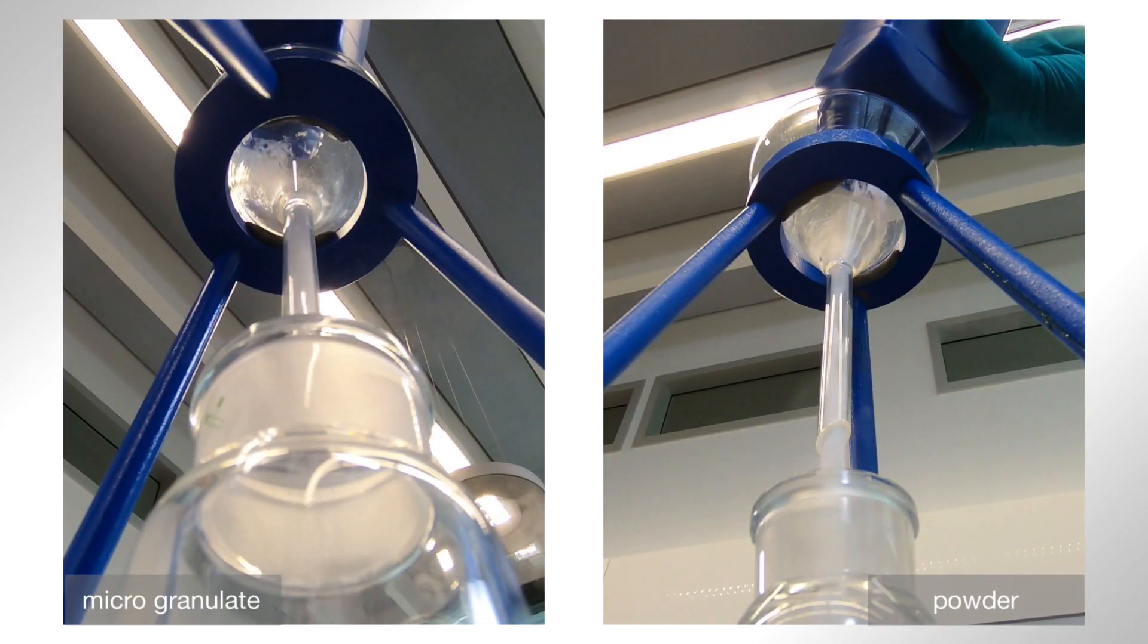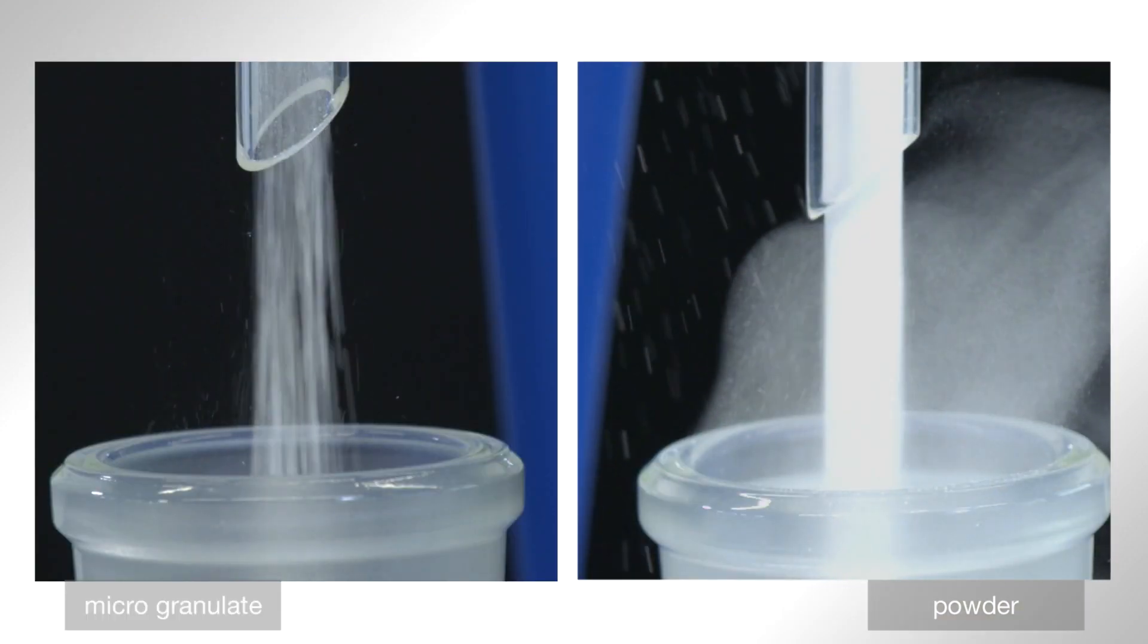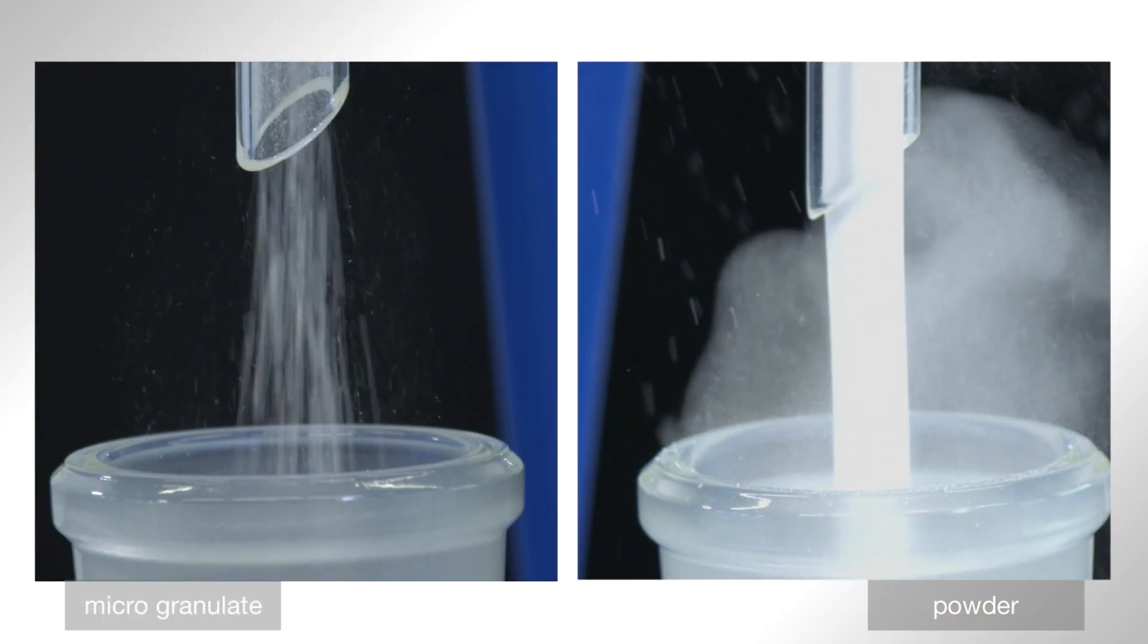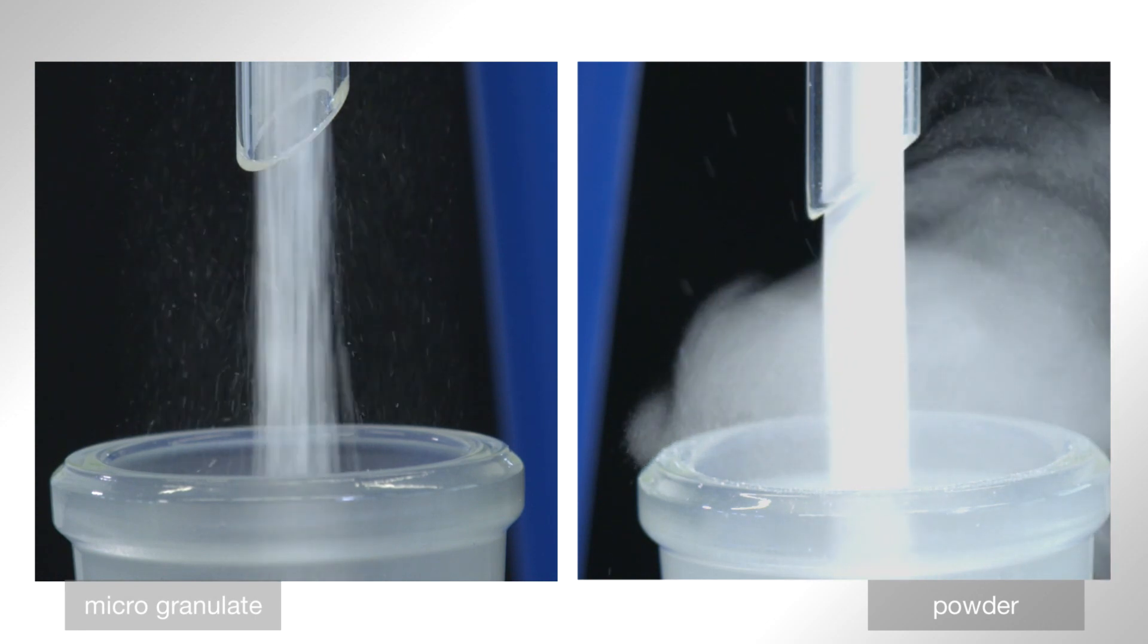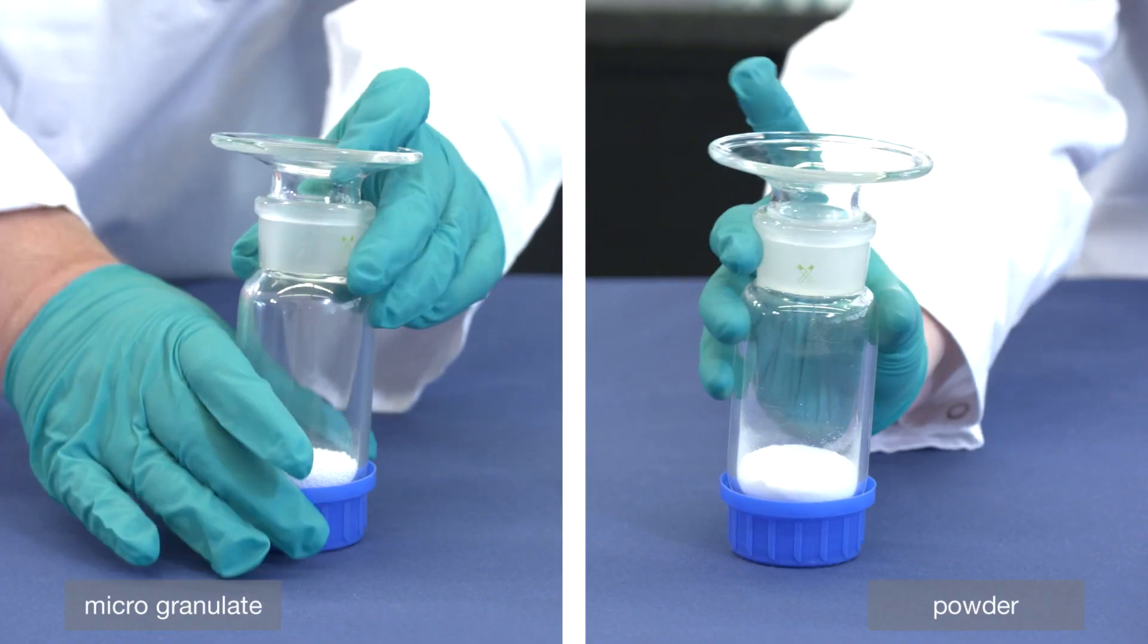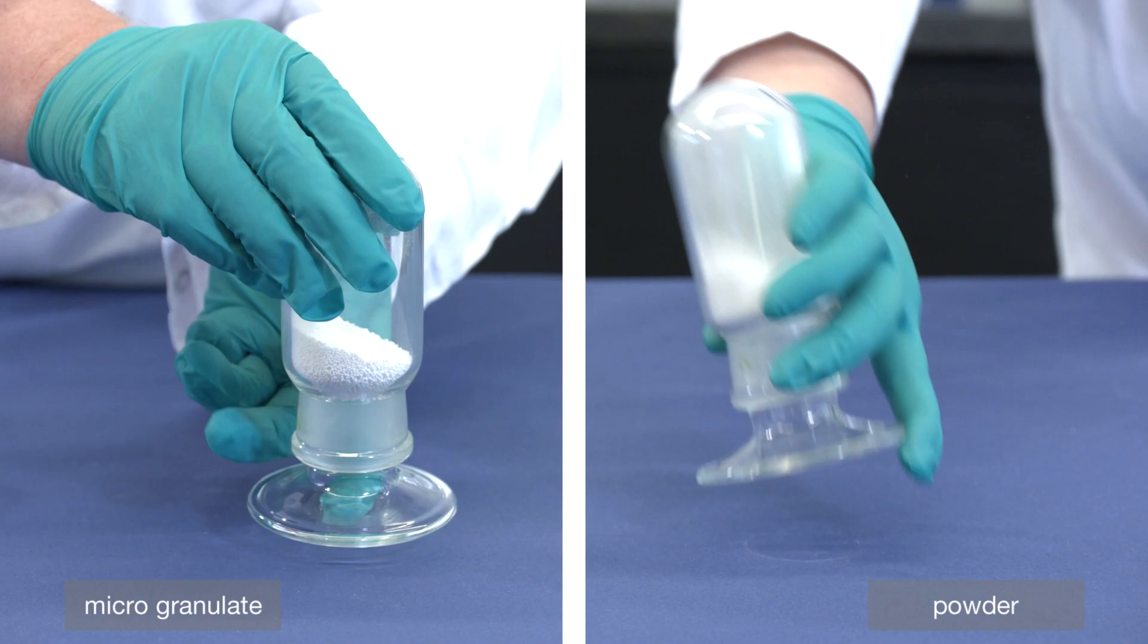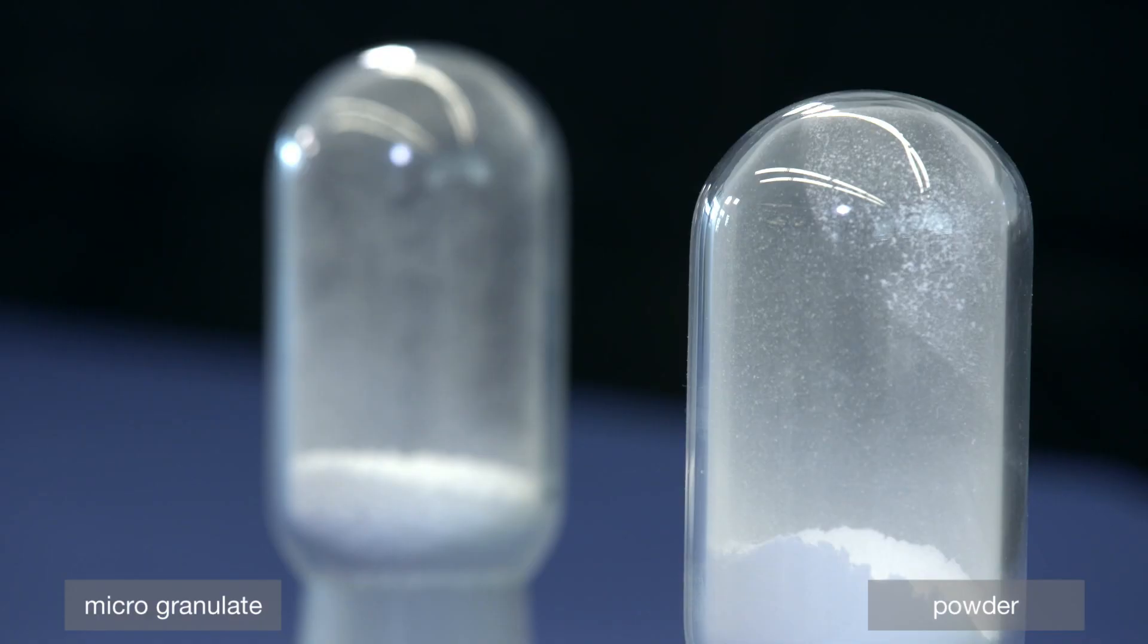The new product form shows excellent dust reduction when compared to standard powder. High dust content can be observed over flowing powder. The microgranulate is less susceptible to electrostatic charge buildup. The danger of dust explosion is reduced due to lower dust formation.